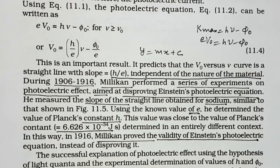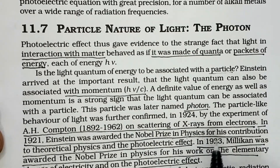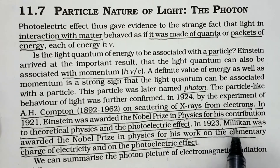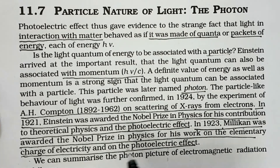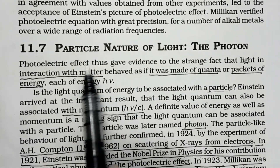Millikan wanted to prove Einstein's theory wrong, but when he saw the results, Einstein's theory was further validated. The particle nature of light was thus strongly established. Albert Einstein received the Nobel Prize in Physics for his contribution to theoretical physics and the photoelectric effect. In 1923, Millikan also received the Nobel Prize — for the elementary charge of electricity measured through the oil drop experiment, and for his work on the photoelectric effect.